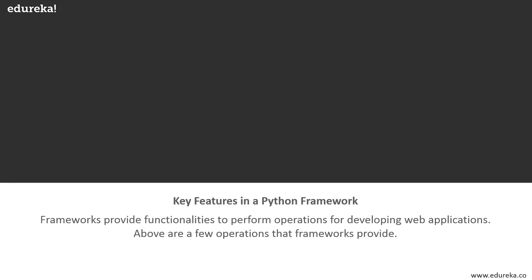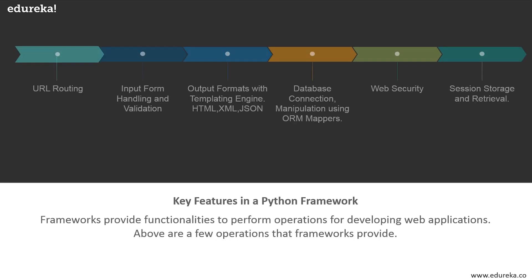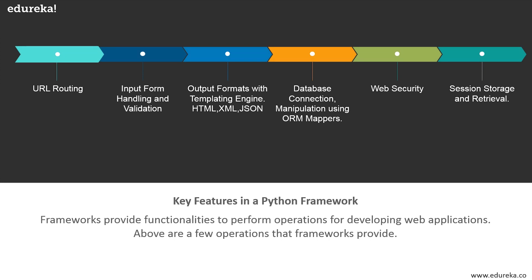Let's take a look at a few operations used to run web applications using frameworks. First, we have URL routing, which is the mechanism of mapping the URL directly to the code that creates the web page. The next one is input form handling and validation, followed by output formats with a templating engine.